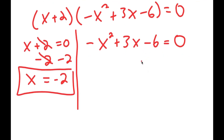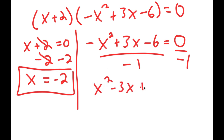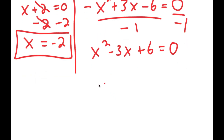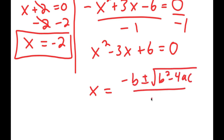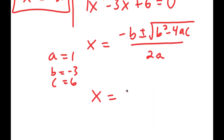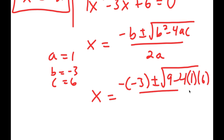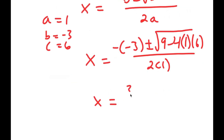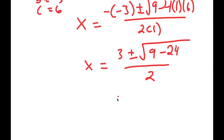Now for negative x squared plus 3x minus 6, I'm going to first divide both sides by negative 1, giving x squared minus 3x plus 6 equals 0. Using the quadratic formula — negative b plus or minus the square root of b squared minus 4ac all over 2a — with a equal to 1, b equal to negative 3, and c equal to 6, I get x equals 3 plus or minus the square root of 9 minus 24 over 2, which is 3 plus or minus the square root of negative 15 over 2.